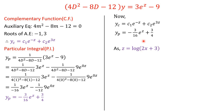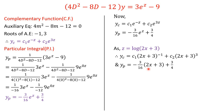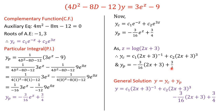The general solution is y = y_c + y_p, but we must write the answer in terms of the original variable x. Since z = log(2x+3), we re-substitute: y_c becomes c₁(2x+3)^(−1) + c₂(2x+3)³, and y_p becomes −(3/16)(2x+3) + 3/4. So the general solution is y = c₁(2x+3)^(−1) + c₂(2x+3)³ − (3/16)(2x+3) + 3/4. Similarly, Legendre's differential equation, being a special case of Cauchy's, can be solved the same way. Thank you.